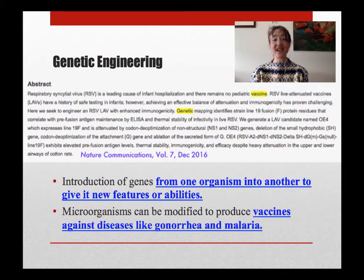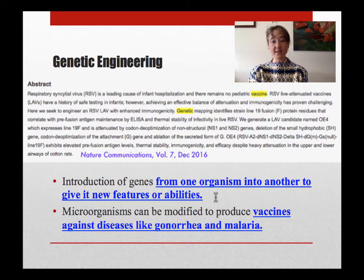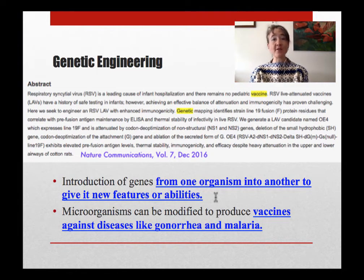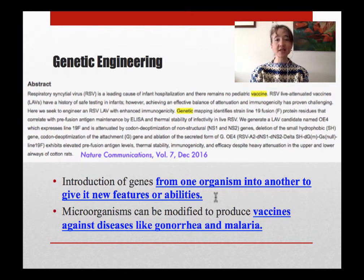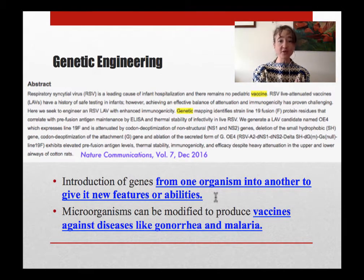Another application is genetic engineering. I know everyone conjures a different image in their mind, so let's define it: it's the introduction of genes from one organism into another to give it new features or abilities. It's something we do in lab every day, and something you'll be doing in lab this semester. You're going to take E. coli cells and give them DNA genes that enable them to glow — to bioluminesce. So you're actually going to be doing genetic engineering — taking genes from one organism, putting them into another, giving it new features.